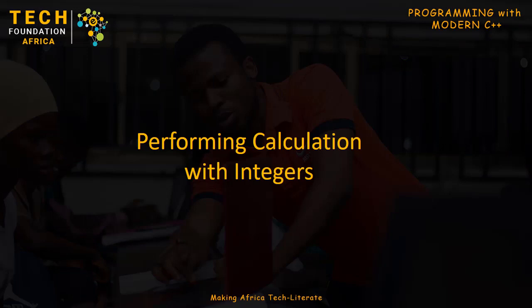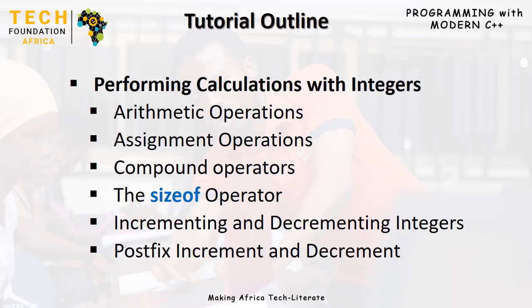In this video I'm going to talk about performing calculations with integers. In the previous episode we learned about integer data types — that integers are negative and positive whole numbers, and the various ways we can represent integer literals in source code: the hexadecimal, decimal, octal, and binary systems. The outline of today's tutorial covers arithmetic operations, assignment operations, compound operators, the sizeof operator, and incrementing and decrementing integers including postfix increment and decrement.